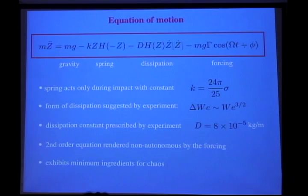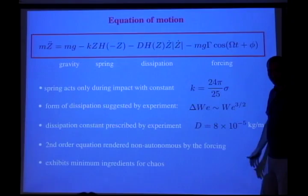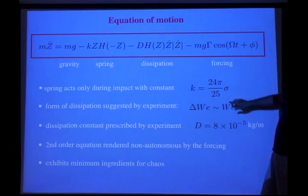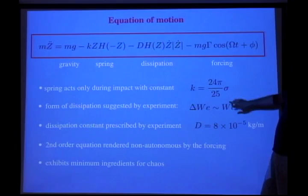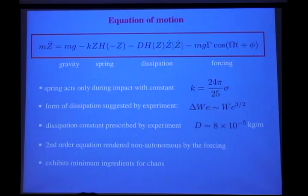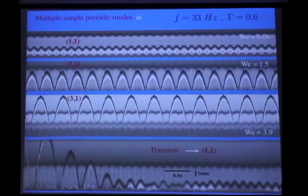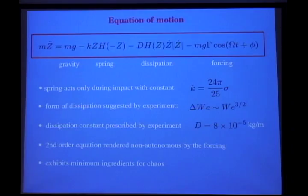We have exactly the same equation as before, plus now we have the forcing term. We're in an accelerating frame — this is like our D'Alembert force. Gamma is the forcing acceleration over G. This is simply from the fact that we describe the system in the accelerating frame of the frame. Same equation of motion, but now we have a forcing term — it's just like turning gravity on and off.